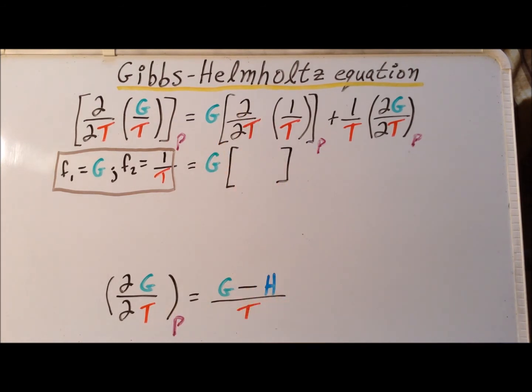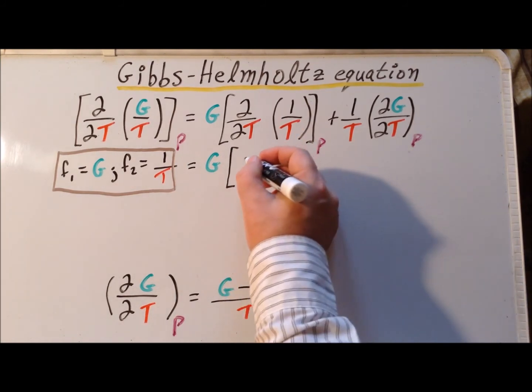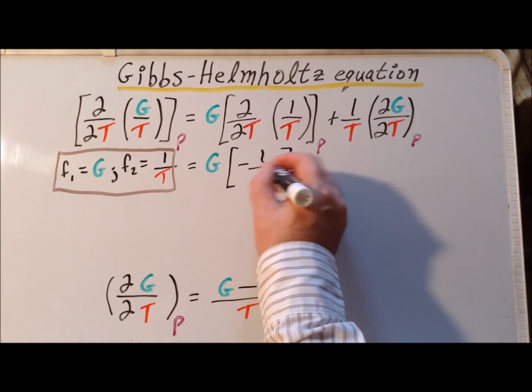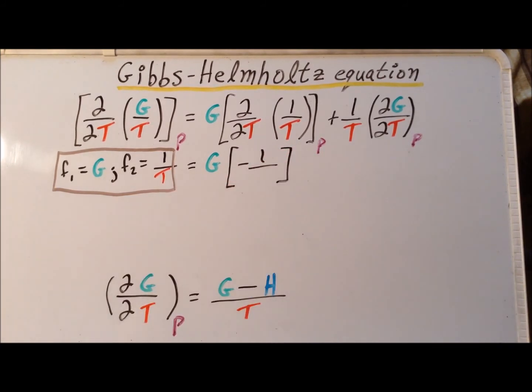Inside the braces, we evaluate the derivative with respect to T of 1 over T, which is equivalent to T to the minus 1. So using our rules for differentiation, this is going to be minus 1 divided by T squared.